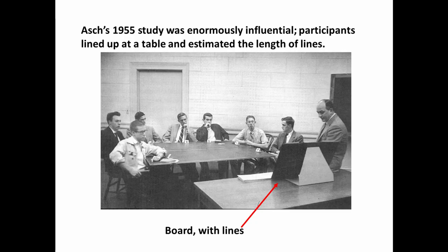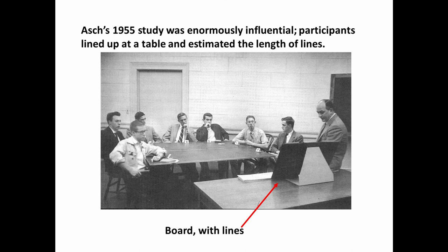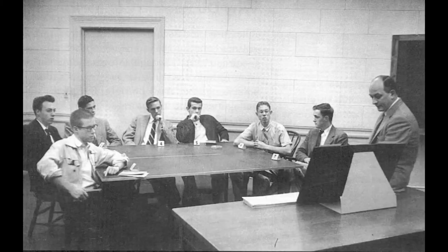That's essentially the paradigm that Asch wanted to set up. Here's a photograph of the people in the experiment — a typical lineup for Asch's study. He did a number of different variations, so it wasn't always exactly like this. You have a set of people in the photograph; it's all men, but Asch also experimented with female participants in some of the studies. What you see here is seven young men lined up at a table, with Asch seated at the table on the far right-hand side.